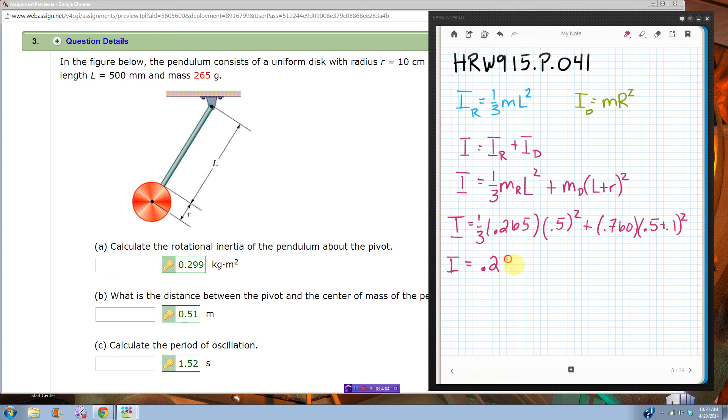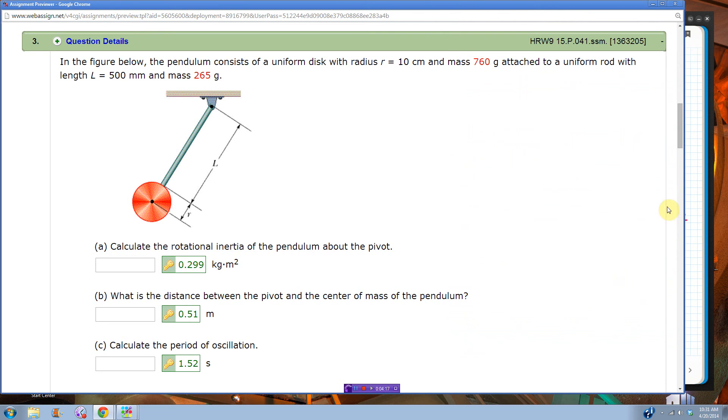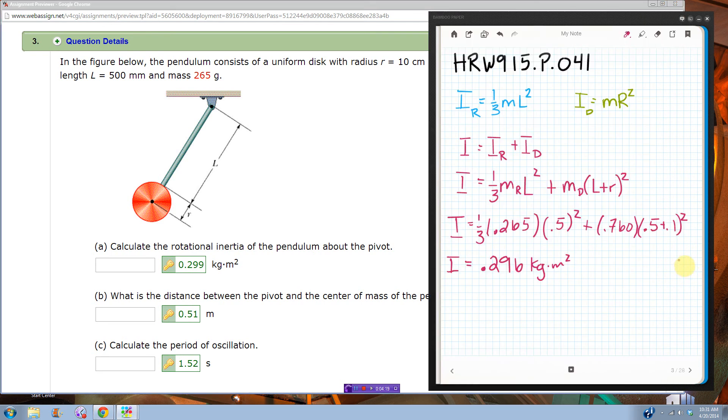But if I round it, I get 0.29, I get 0.296 kilogram, oops, kilogram per meter squared, they have 0.299, that really does bother me, why am I different? If you can figure out where I'm different, let me know, maybe I just put something wrong in my calculator or something. But, um, but yeah, that should be it.